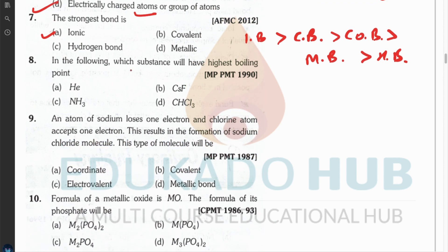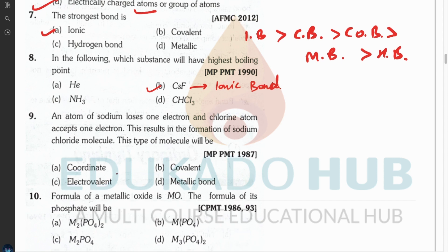Question eight asks which substance has the highest boiling point among helium, ammonia, CsI₃, and another option. The answer is CsI₃ because it is the only compound that is ionic in nature, having an ionic bond. All others have covalent bonds.